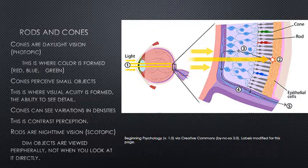Rods are activated in low light, while cones need many more light photons to hit them to be activated. These activated photoreceptor cells send their signal to the neural cells, and the neural cells send them to the optic nerve. The optic nerve sends the signal to the brain where it is processed, so the complete image can be seen rather than just individual parts from rods and cones being activated.